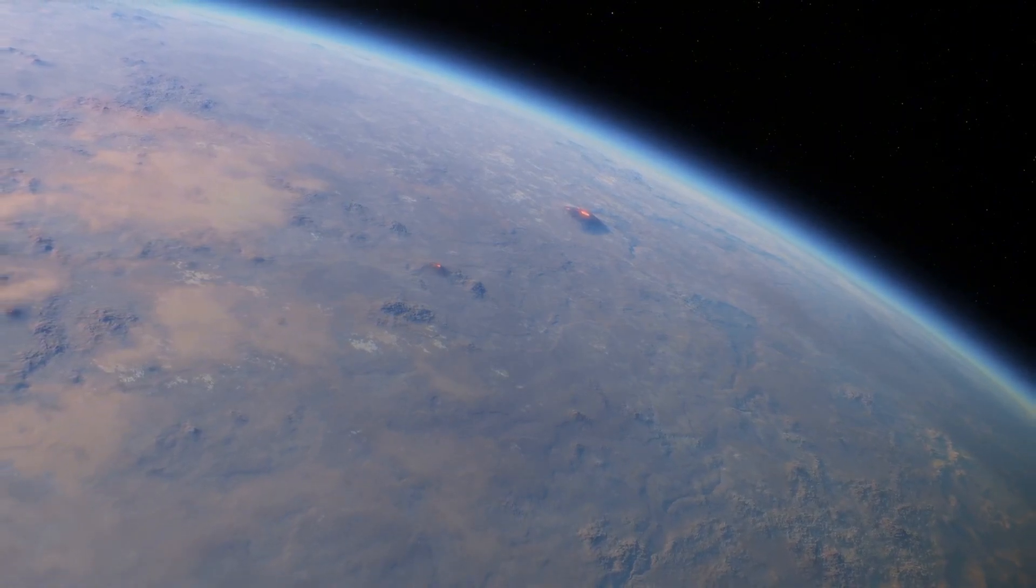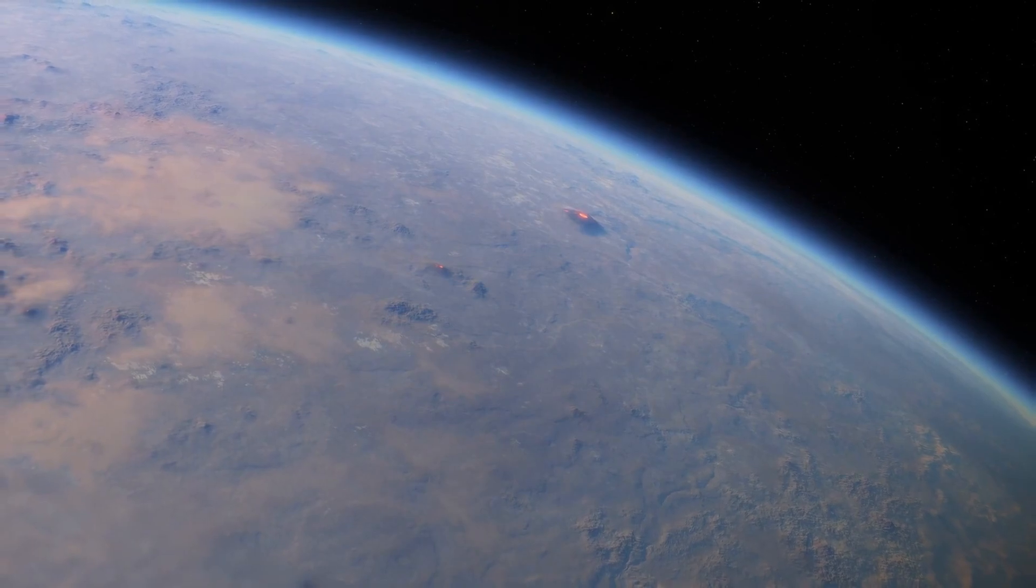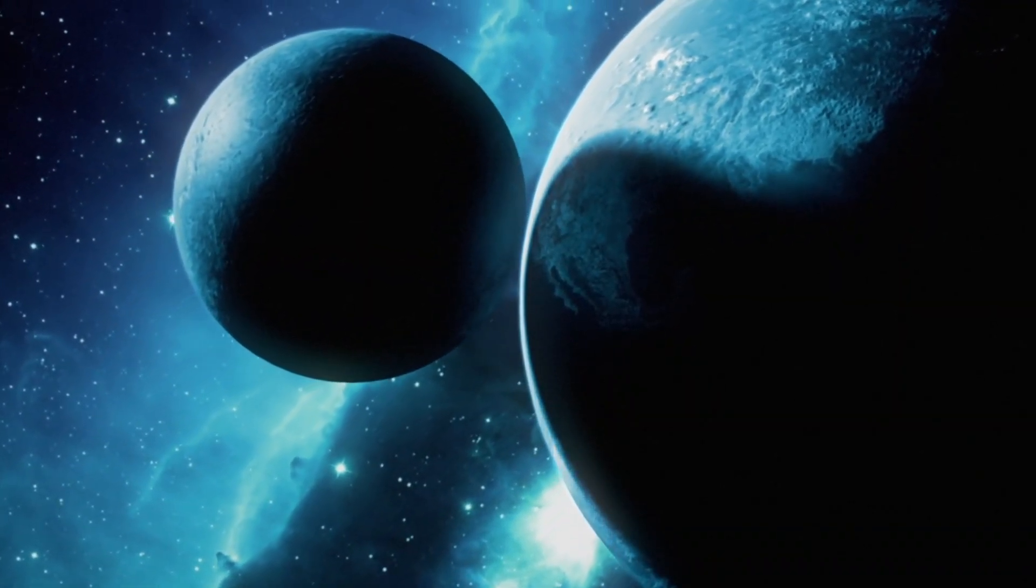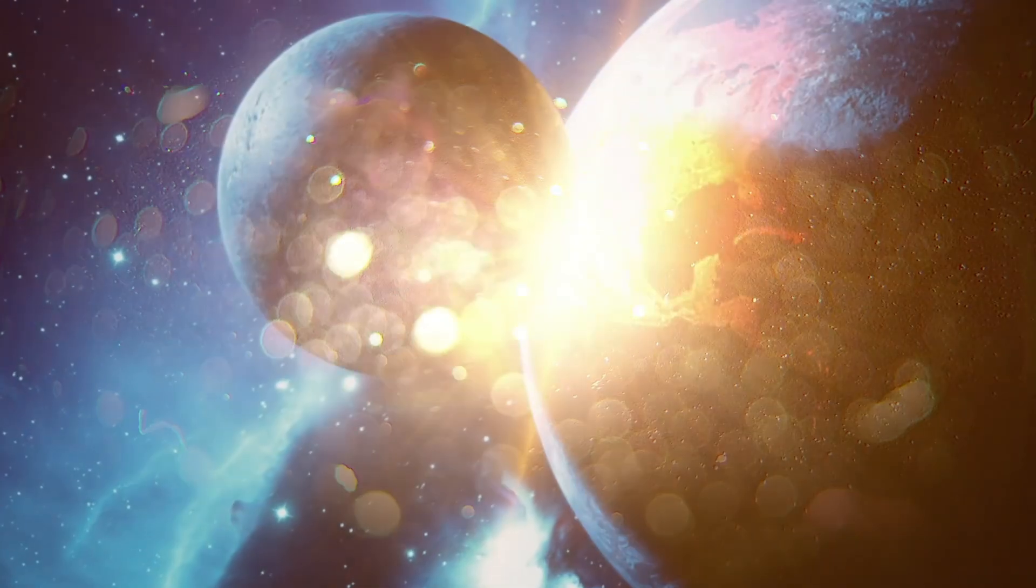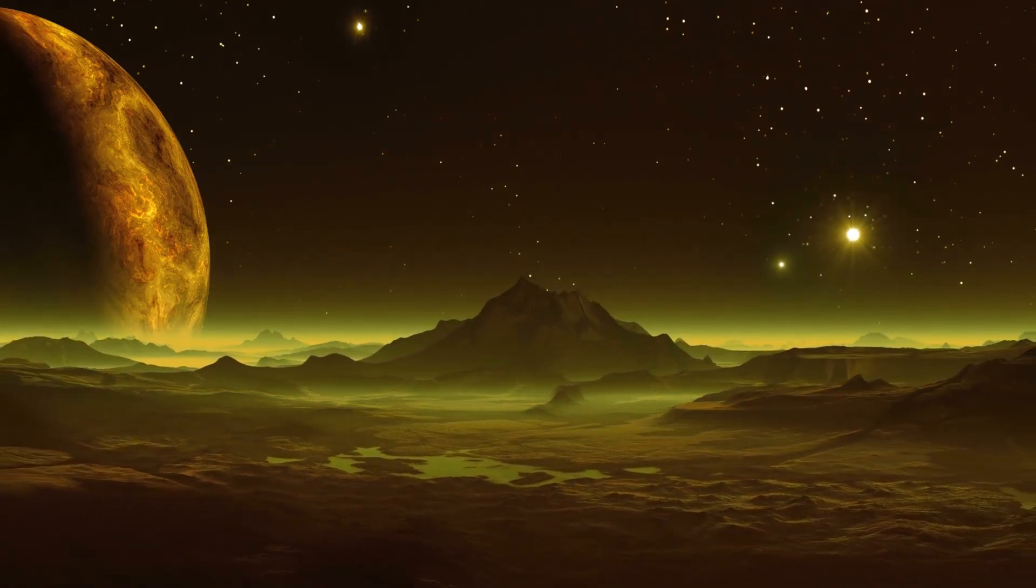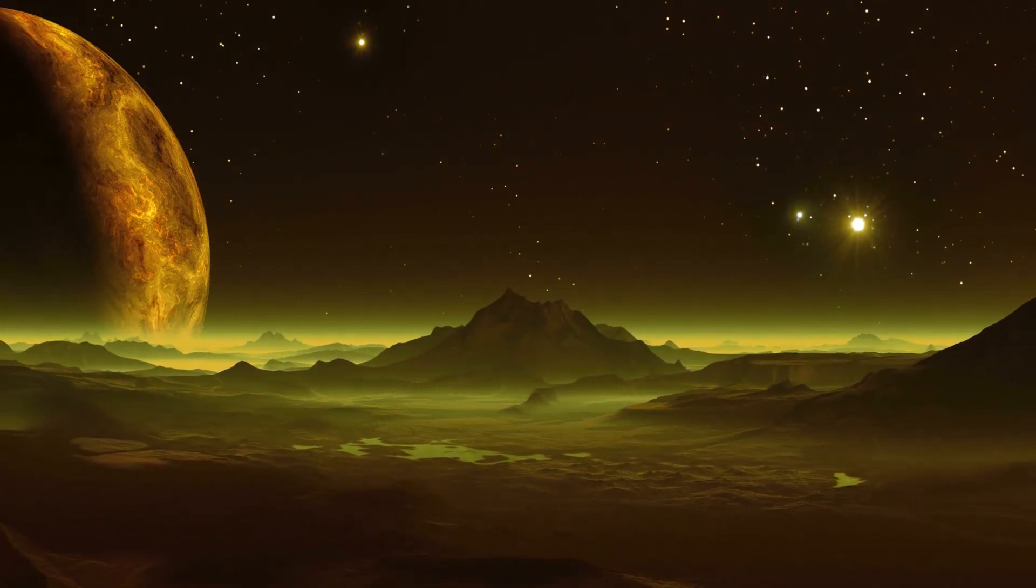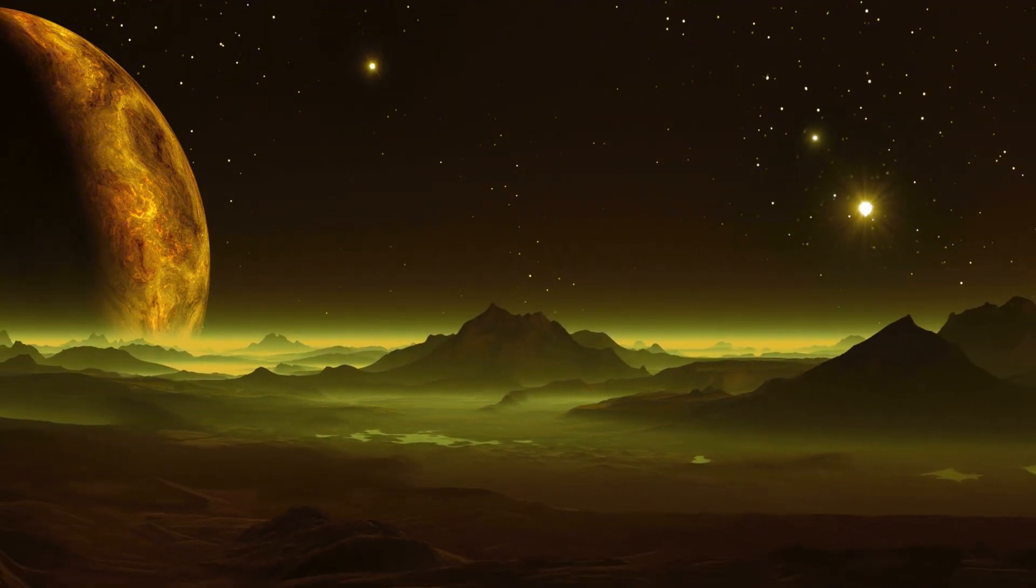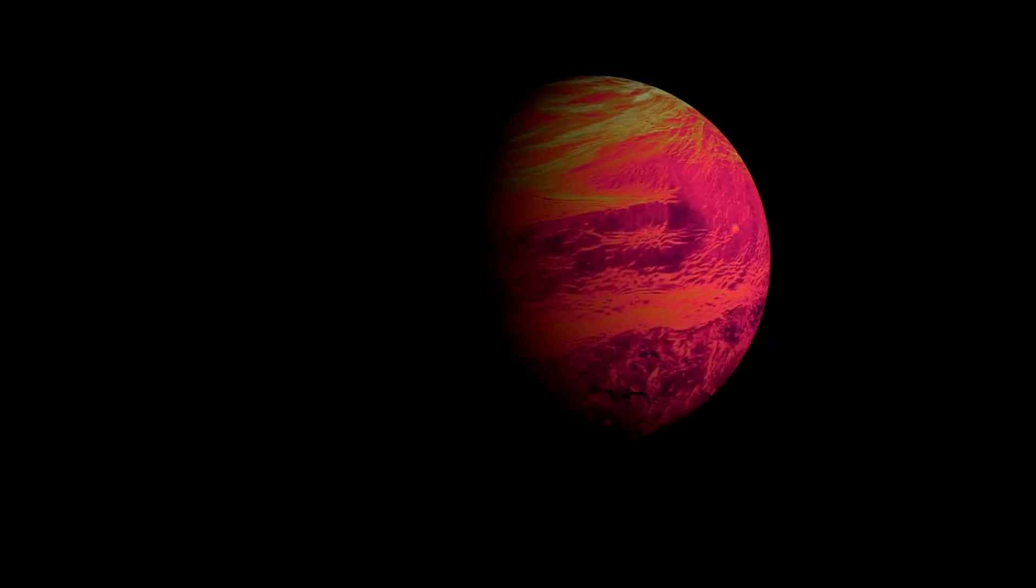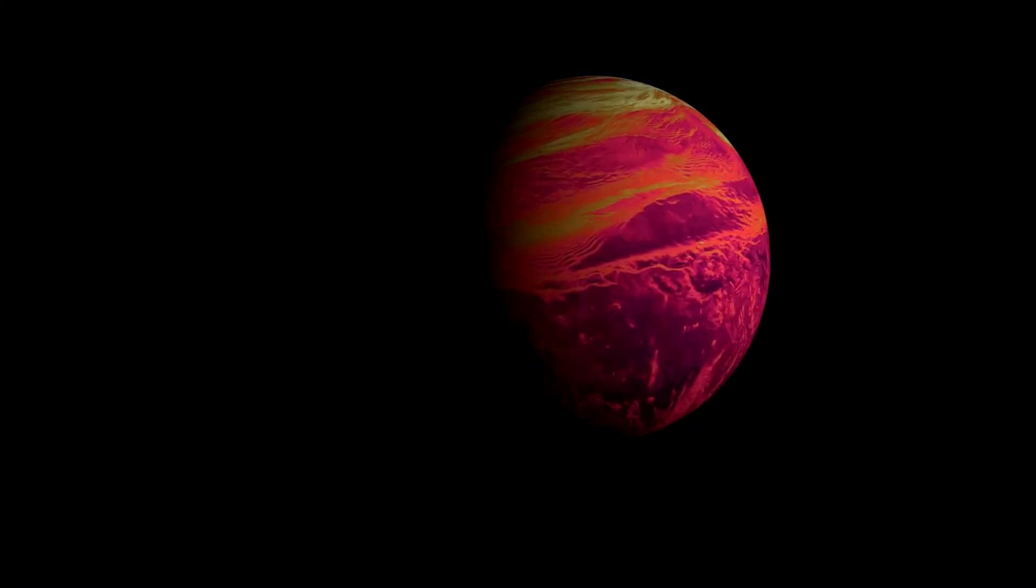The James Webb Space Telescope, JWST, is not just another tool in the arsenal of astronomy. It is a revolution designed as the successor to the Hubble Space Telescope. JWST was envisioned to address the limitations of its predecessor and push the boundaries of human knowledge. While Hubble has provided invaluable insights into the cosmos, including the age of the universe and the discovery of thousands of galaxies, its capabilities are constrained by its focus on visible and ultraviolet light. JWST, by contrast, is built to observe the universe in infrared wavelengths, allowing it to peer through cosmic dust and uncover phenomena invisible to Hubble.